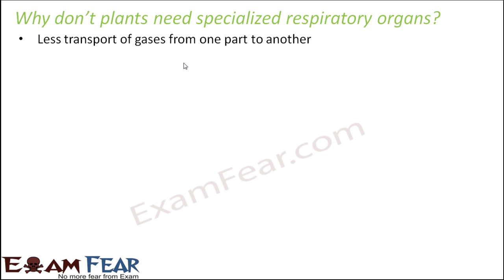Some reasons why plants do not need specialized organs: first, less transport of gases from one part to another. Each part of the plant takes care of its own needs. For example, in the roots, the exchange of gases happens by diffusion through the root hairs. Roots take care of their own. Stems also have lenticels, so they do it on their own. Leaves have stomata, they do it on their own. So you really don't need to transport gases from one corner of the plant to the other, and maximum exchange takes place only during photosynthesis.